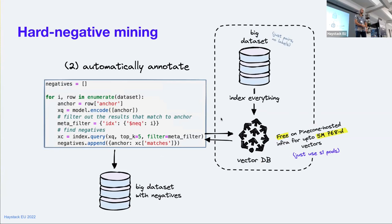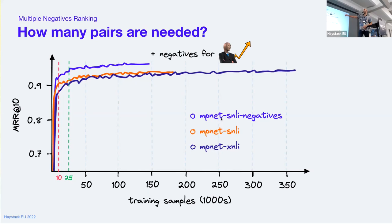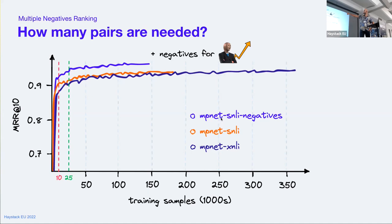How many pairs do we actually need for multiple negatives ranking? As a rule of thumb, around 10,000 pairs, but it really depends on your dataset, use case, and other factors. When running tests, by the 10k mark you're getting into the zone where performance stabilizes. At 25k, you're pretty much safe — if you have 25k or more, you can probably use multiple negatives ranking and get pretty good performance. Adding hard negatives increases performance a lot, so if you can get those, you definitely should.